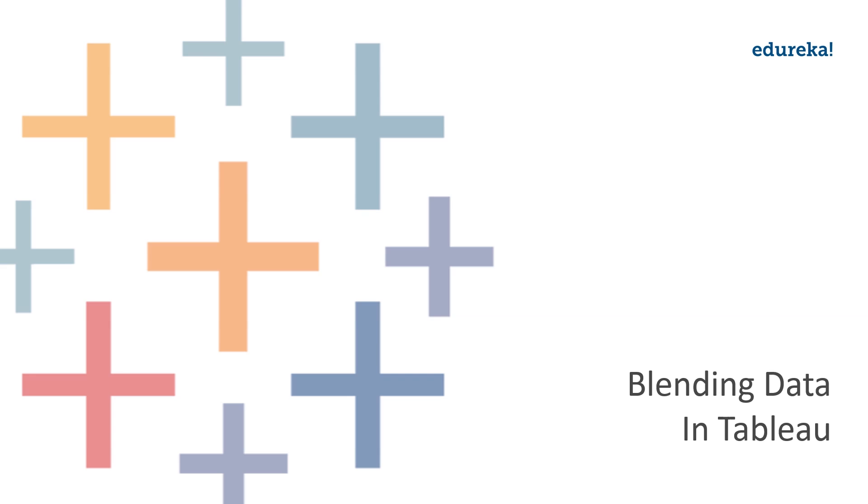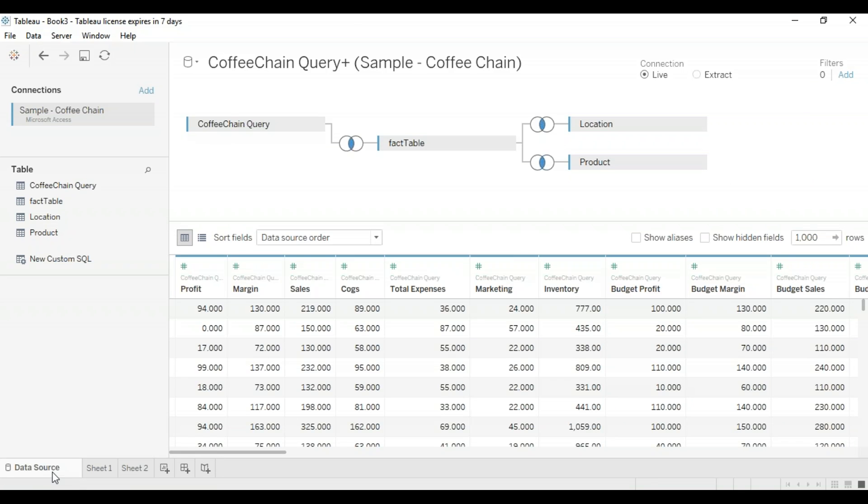Now, how can you blend your data? You can use data blending when you have data in separate data sources that you want to analyze together on a single sheet. The example I'm going to show you now demonstrates how to blend your data from two different sources. Now for this, I'll be moving on to my tableau desktop. And here I'm going to be using two data sources named the sample superstore, which is already included in the sample data sets of tableau, and the sample coffee chain, which is another very easily available data set for tableau online. So first I have already loaded the sample coffee chain to tableau. And now here is its metadata. We see profit margin, sales, cogs, total expenses, marketing, inventory, budget, profit margin, budget, sales, etc. And this is all in an MS access database file. Here you can see all the various tables and joints that are there in this query right here.